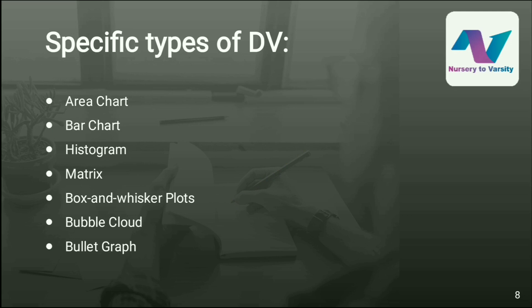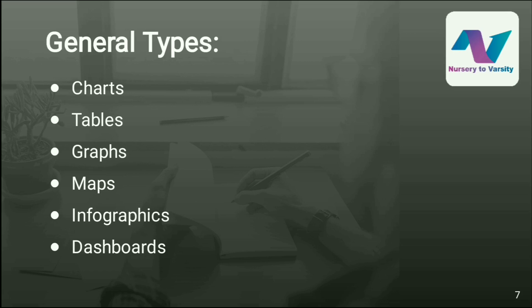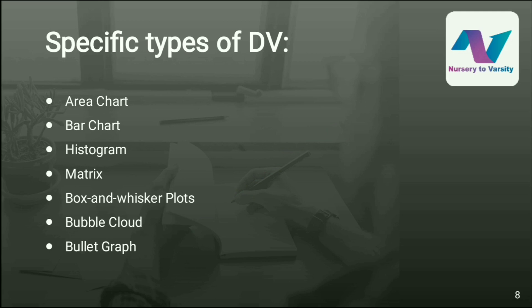Now, what are the specific types of DV? These are the types which not everyone has heard about. They include the area chart, bar chart, histogram, matrix, box and whisker plots, bubble chart, bullet graph, and many more. The general types are what everyone knows, while the specific types of data visualization are those that most people are not familiar with.